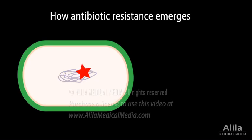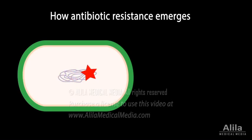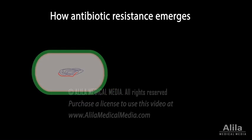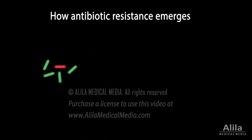Mutations in the bacterial genome occur all the time, spontaneously, but only the ones that confer a certain advantage would persist to the next generation. Let's consider a situation when a new mutation emerges and makes the bacteria resistant to a certain antibiotic.